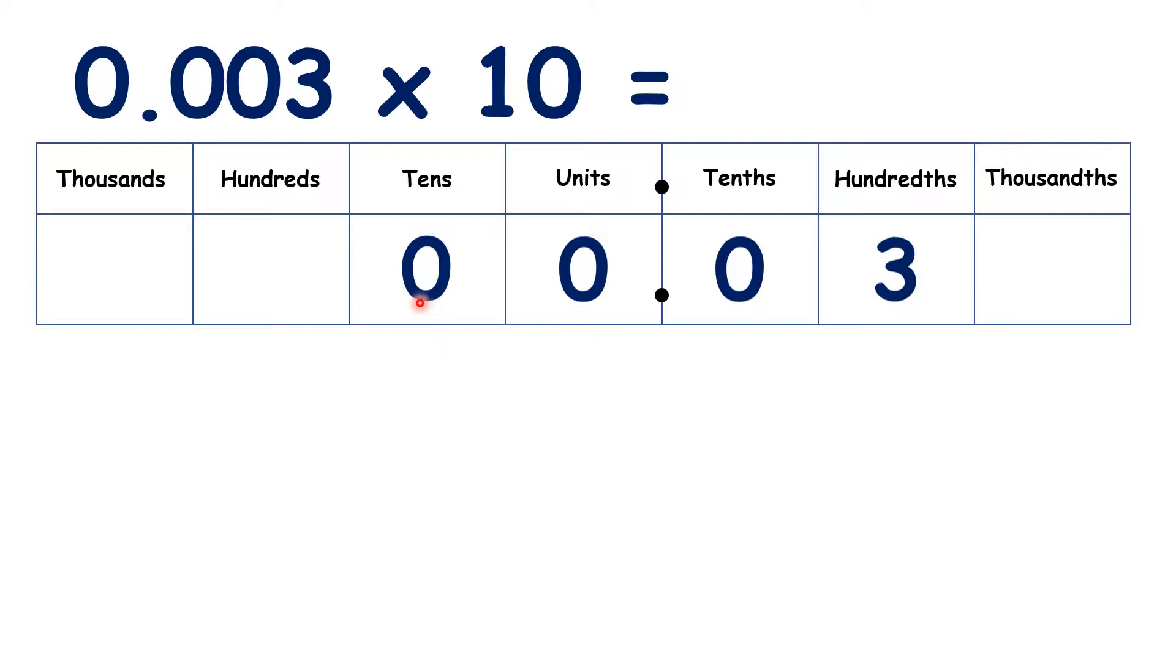We can ignore this digit in our tens, but we always need a digit in the units column, so we keep this 0. And this 0 in our tenths is important because we need it to show that we now have 3 hundredths, not 3 tenths. So our answer is 0.03.